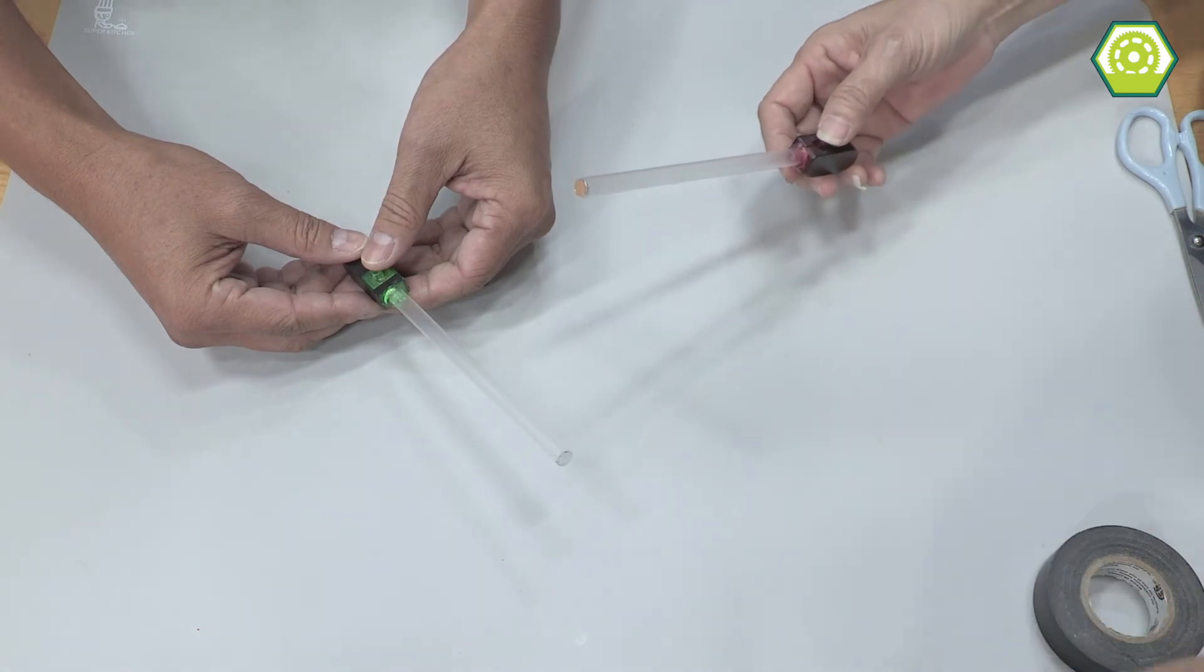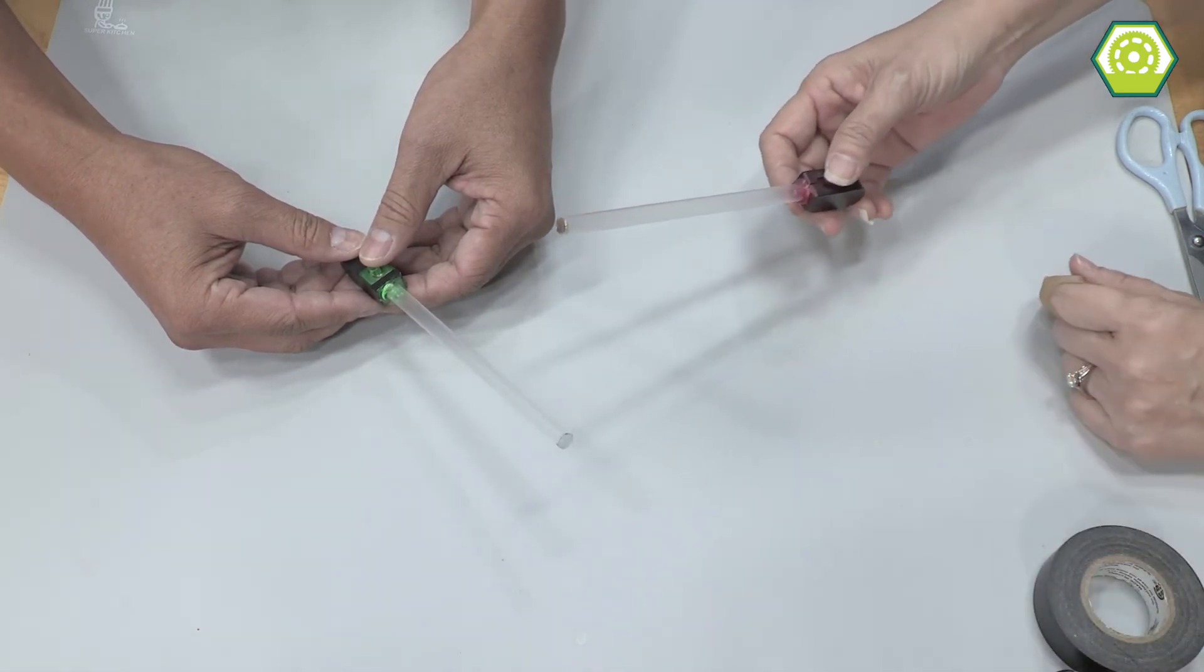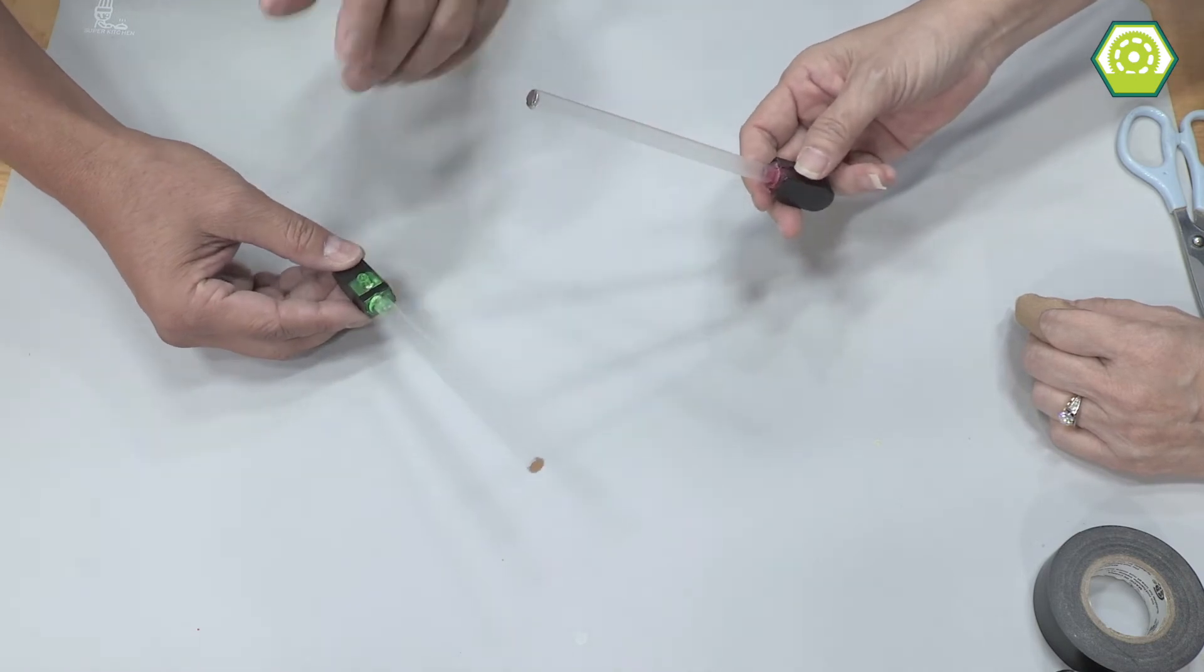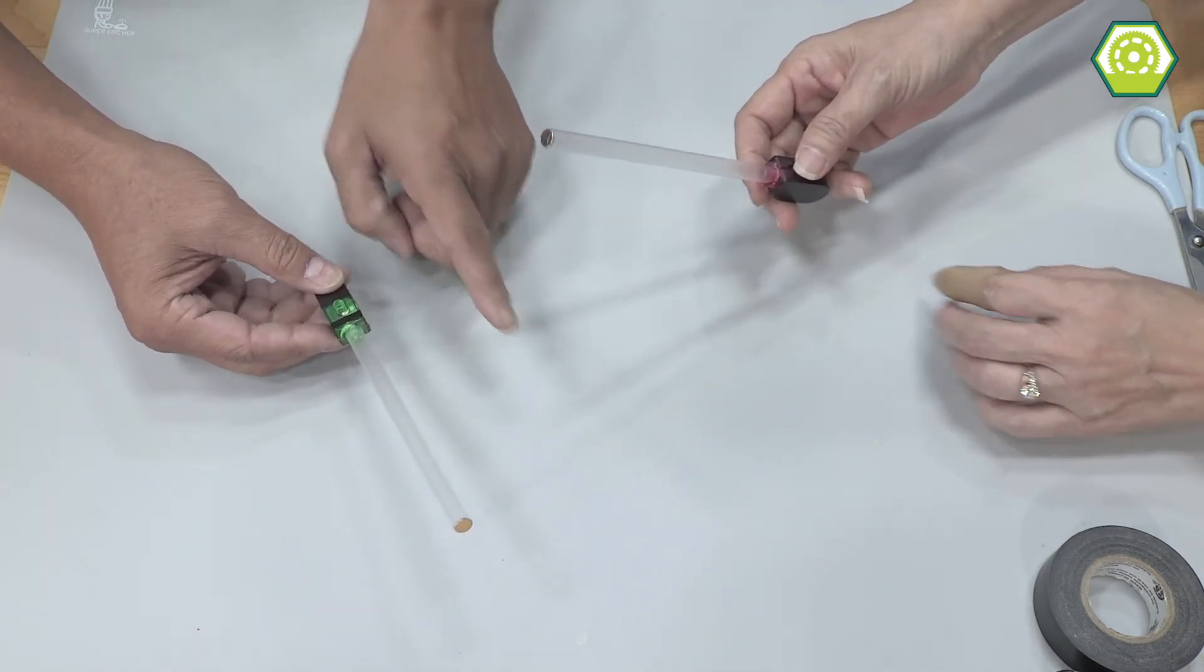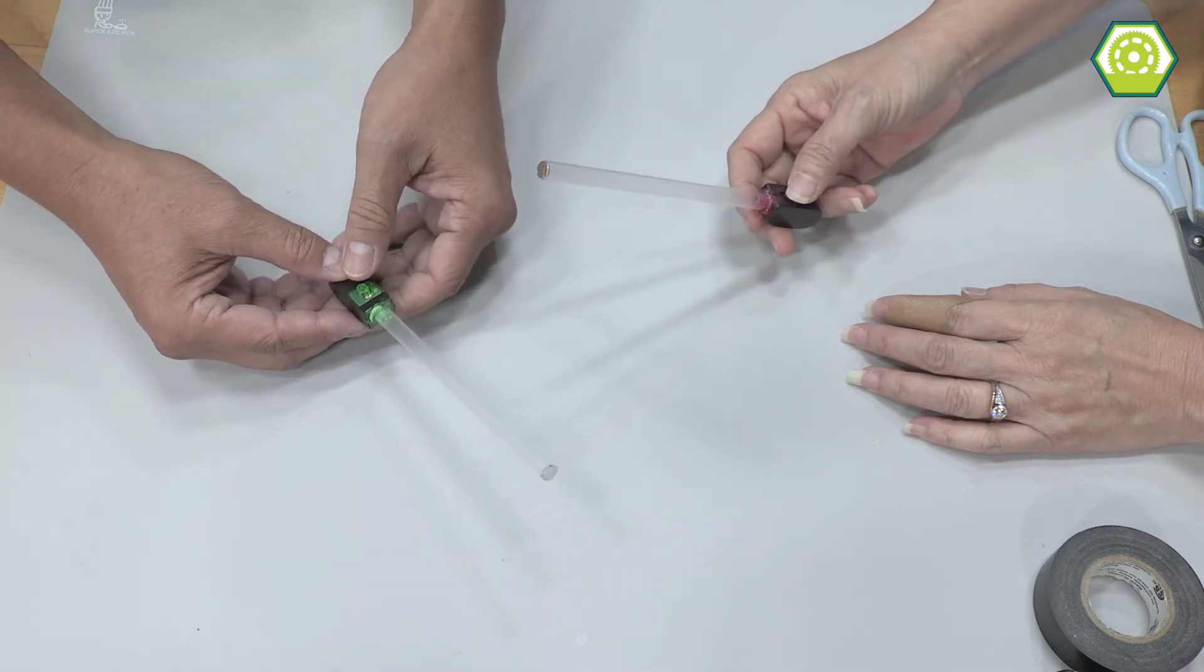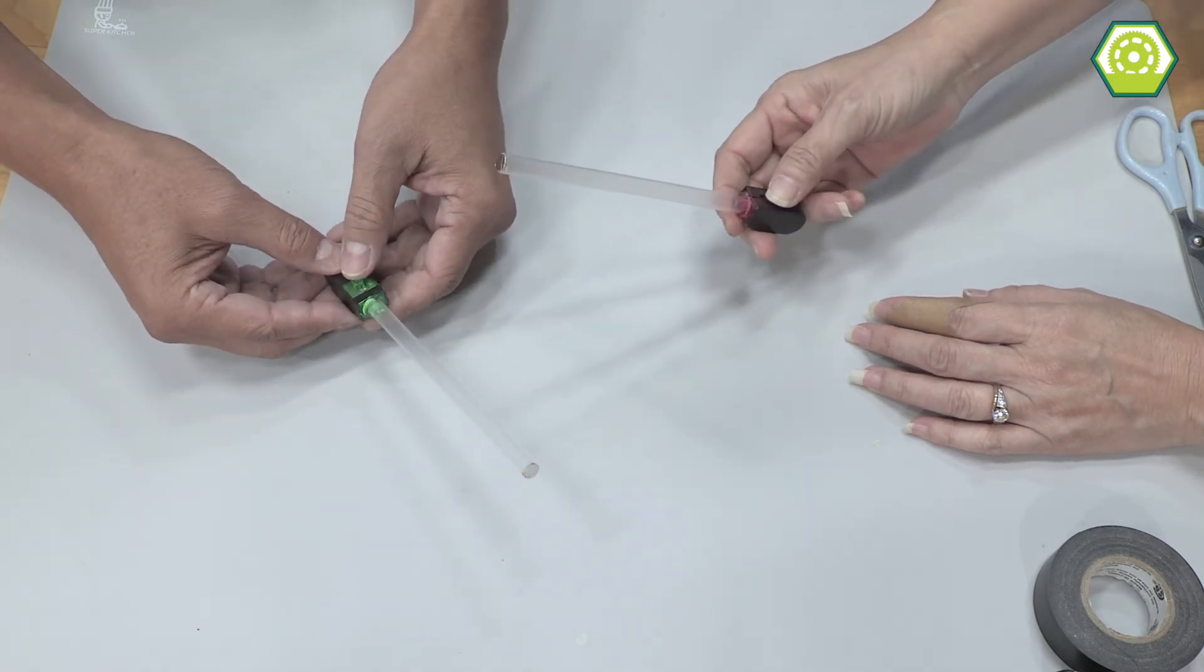All right, so are we ready to turn our lightsabers on? I'm ready to turn it on. Yeah, you're ready? Okay. On the count of three. Wait, wait, wait. Can we make that noise that the lightsabers do when they turn on? Of course we can, Cor. Awesome. All right. Ready? One, two, three.